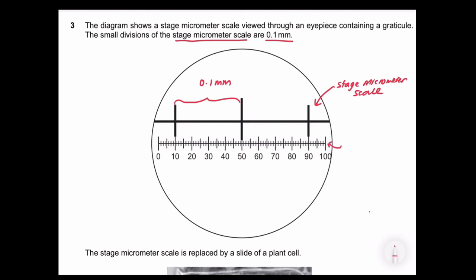So the one with the smaller scale, that would be the eyepiece reticule. So we are going to use a stage micrometer to calibrate your eyepiece reticule.